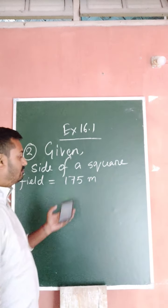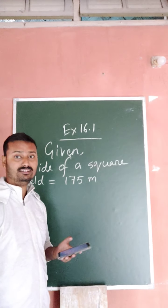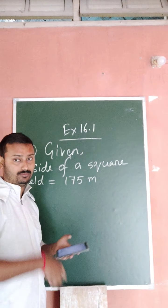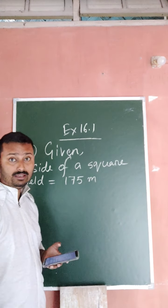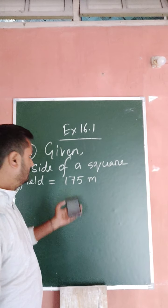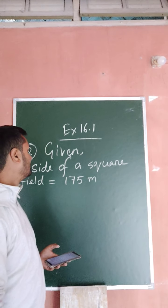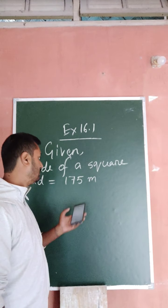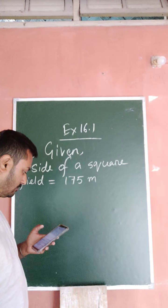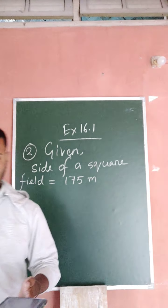Because in case of — suppose this one is 175 cm, then imagine the square field. It is very small. That would not be considered as a field. So remember the correct unit: the side of a square field is 175 meters. So we have to find the area of that field.